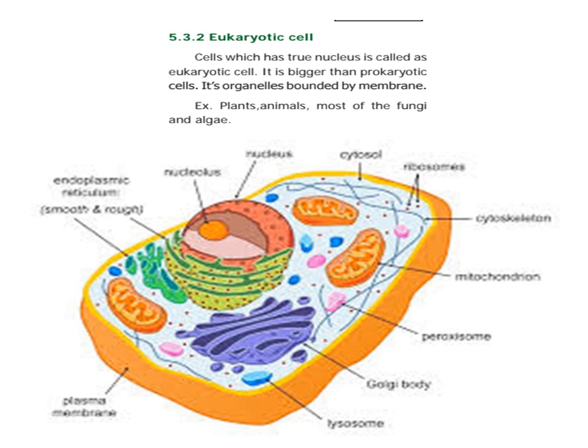Eukaryotic cells have a true nucleus — it is called a eukaryotic cell. It is bigger than prokaryotic cells.